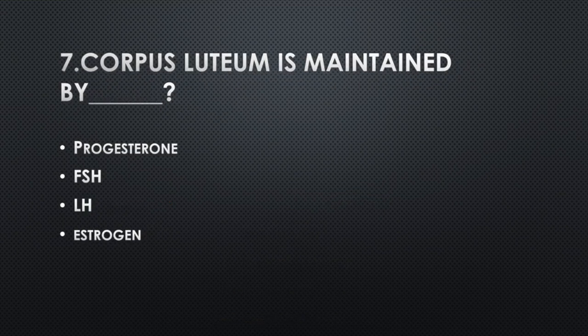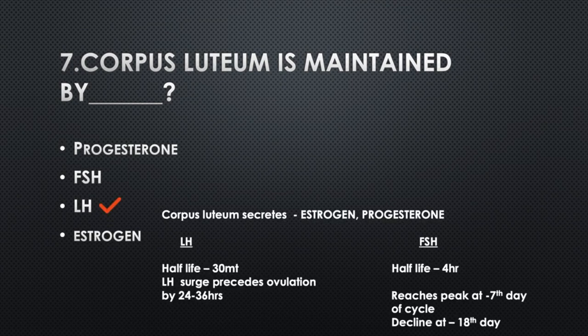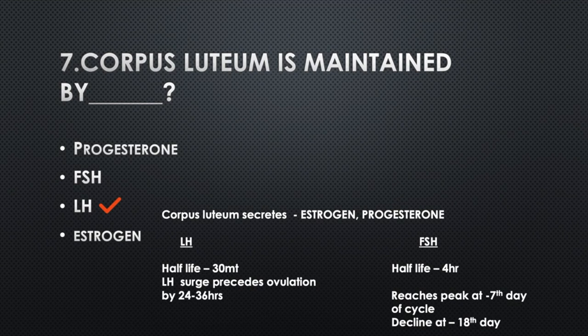Corpus luteum is maintained by — Option A: Progesterone, Option B: FSH, Option C: LH, Option D: Estrogen. Answer: Option C, LH. Corpus luteum secretes estrogen and progesterone. LH half-life: 30 minutes. LH surge precedes ovulation by 24–36 hours. FSH half-life: 4 hours; reaches peak at 7th day of cycle and declines at 18th day.